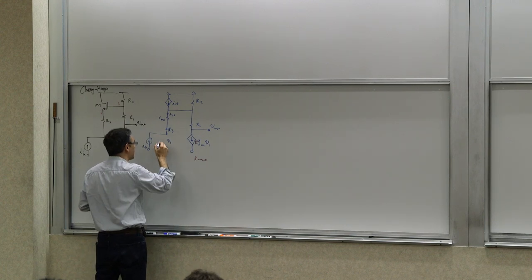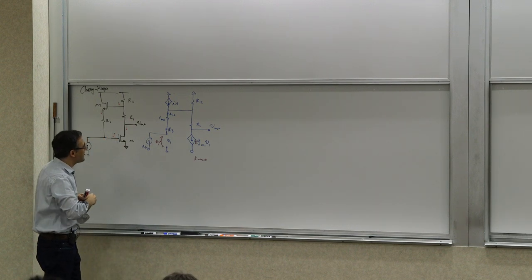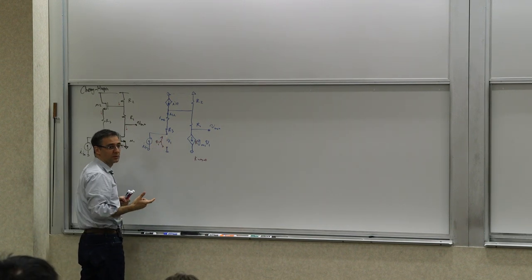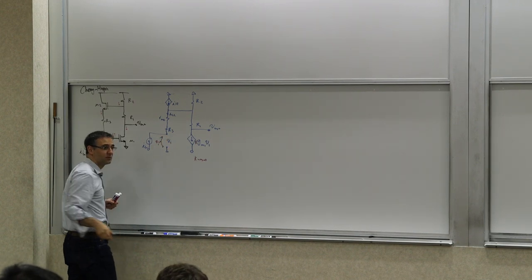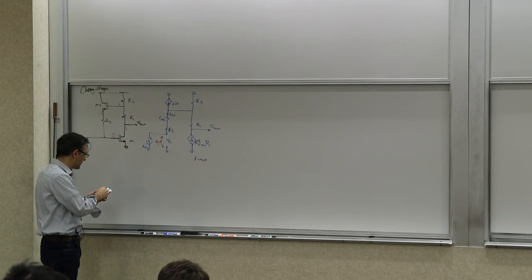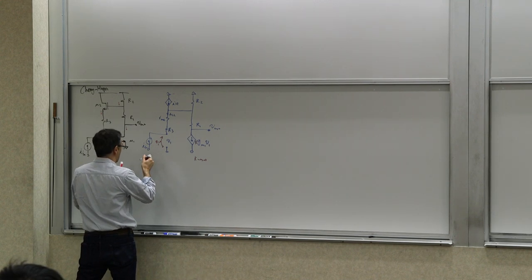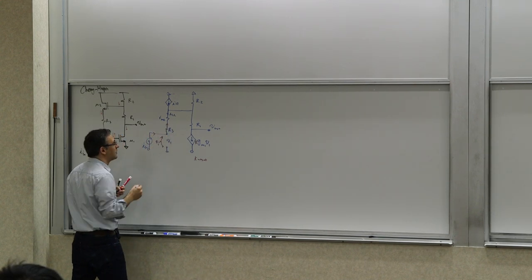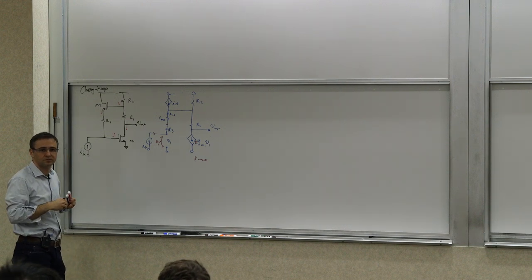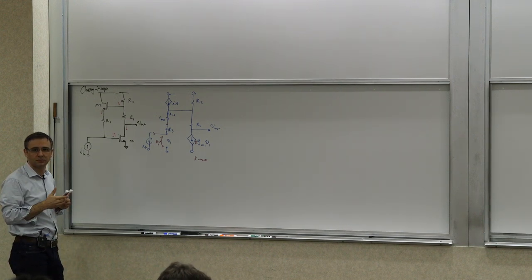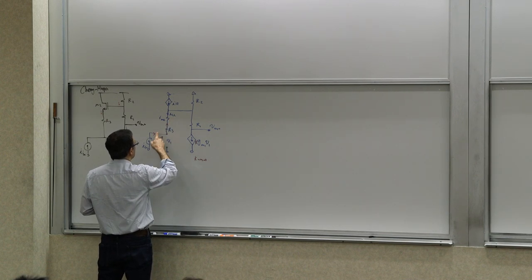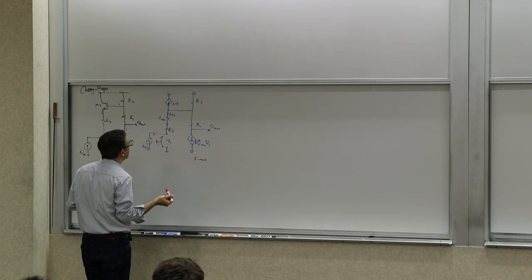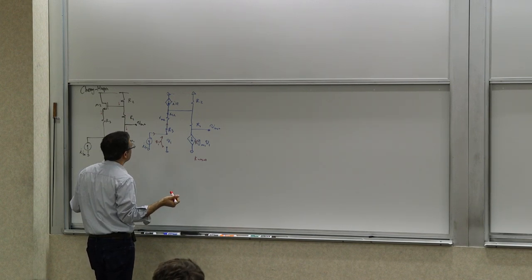This means that all the current flows through here, and that IS2 equals negative I-in. More usefully, what does this voltage have to be? This voltage is zero, and this current is I-in. So this voltage has to be negative (Rm2 + R3) times I-in, since that's the voltage drop across those two resistors.